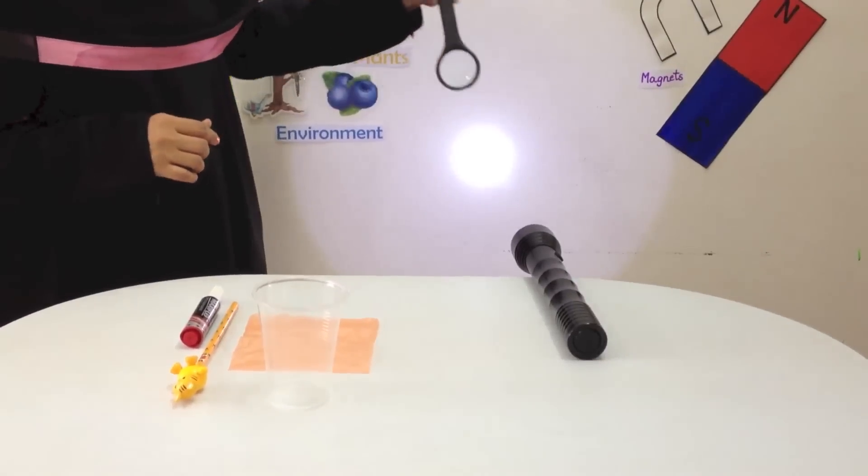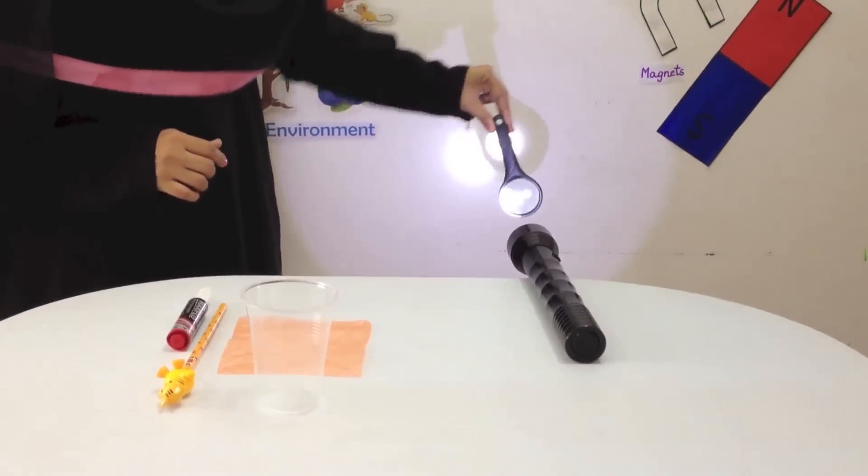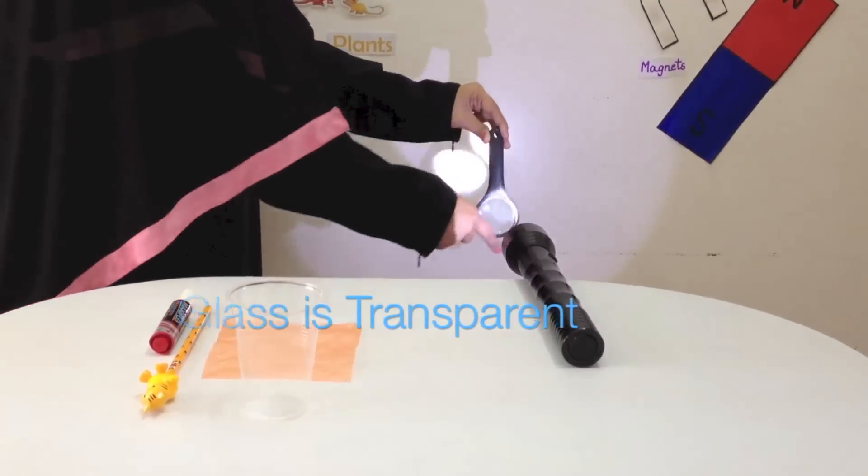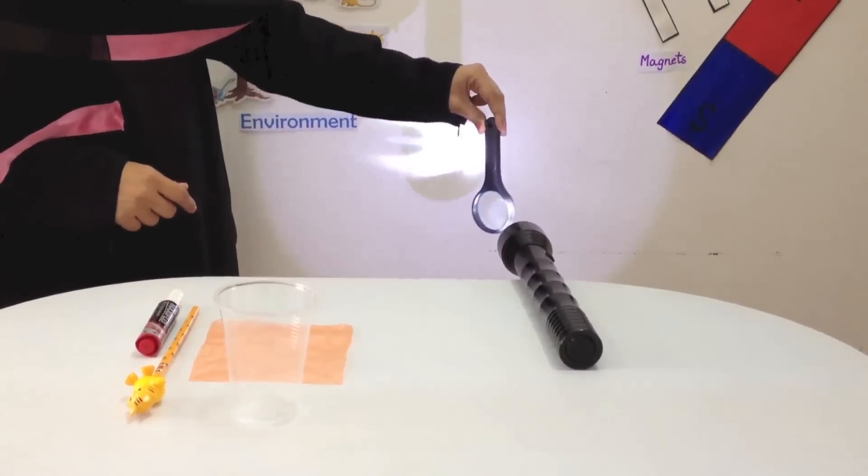First of all, I'm going to place a magnifying glass in front of this torch. And you can see that the glass part is allowing the light to go through, whereas the surrounding plastic is opaque and it is not allowing the light to go through.